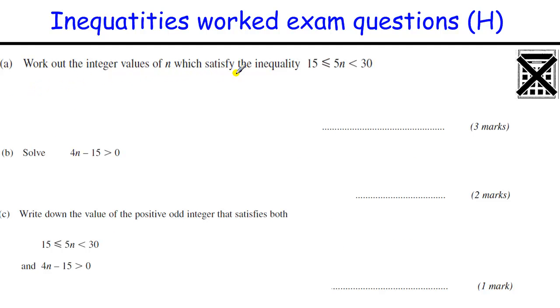Work out the integer values of n which satisfy this, 15 less than or equal to 5n less than 30. So when you've got multiple inequalities we're looking for the values between these two things, but we just need the letter n, not 5n, so we need to divide by 5, so 30 divided by 5 is 6, 15 divided by 5 is 3. So the integer values, what they're allowed for that, so we're starting at 3, that's allowed because it's including 3, 4, 5, but not 6, because it's going to be less than 6.